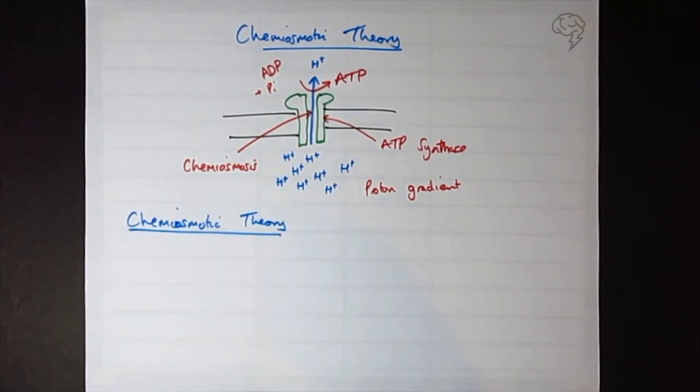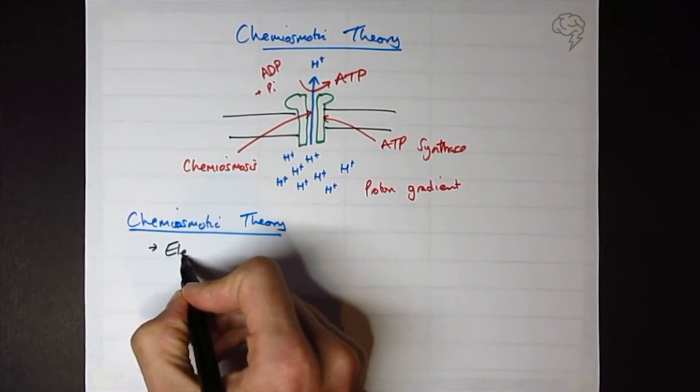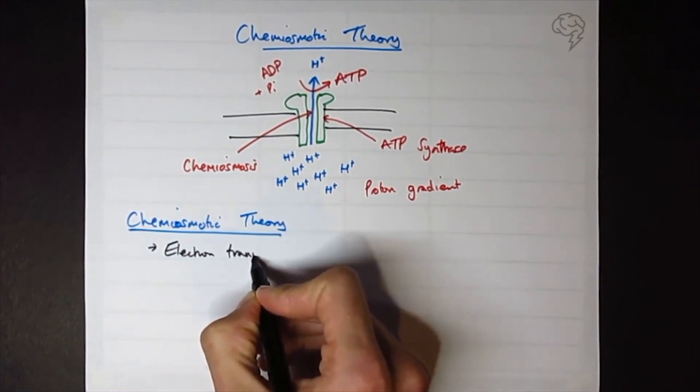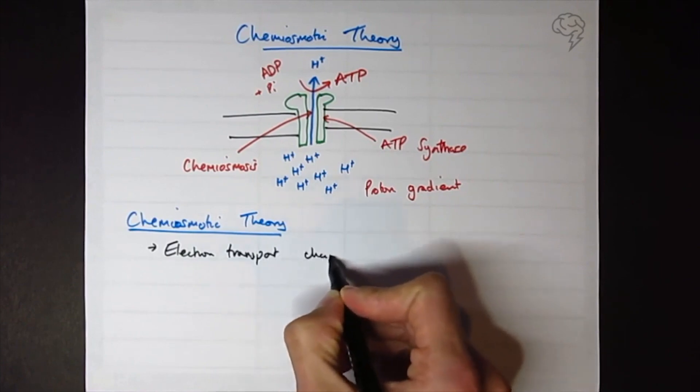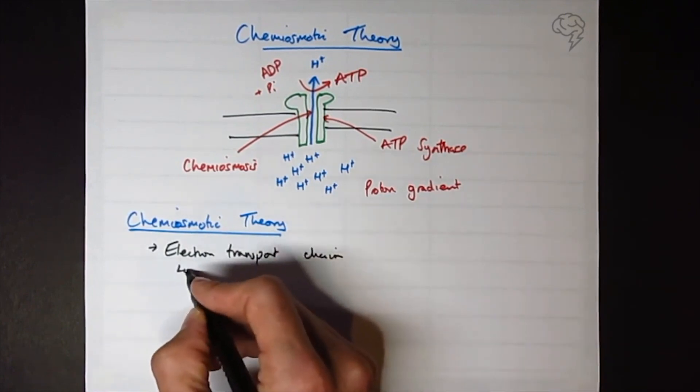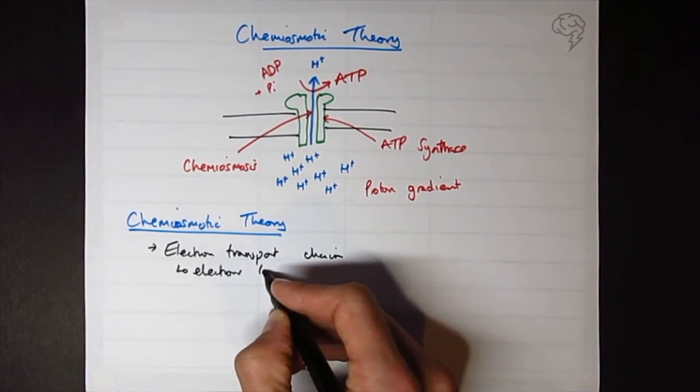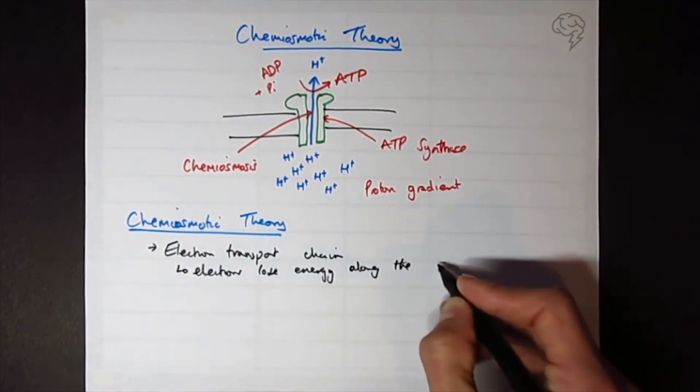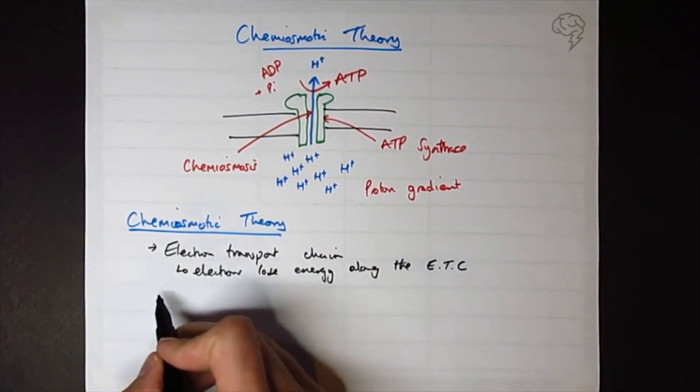So we can say that it's an electron transport chain that causes a proton gradient, which then diffuse through ATP synthase. Remember what an electron transport chain is: an electron flowing through proteins in a membrane, so electrons lose energy. I'm going to put ETC - electron transport chain - and we can say this energy...